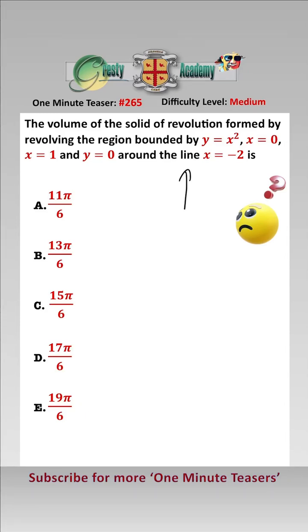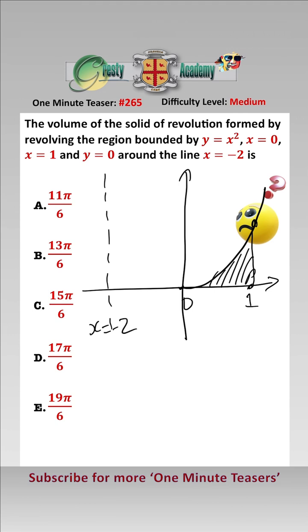So let's draw a diagram just for clarity. There's the y-axis, here's the x-axis, here's the point x equals 1, x equals 0. This is y equals x squared, so this is the region that we are going to rotate, and we are going to rotate it around the line x equals minus 2.